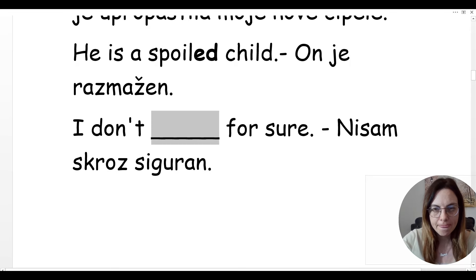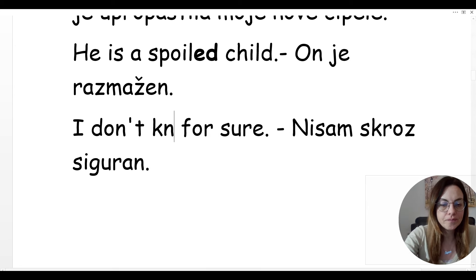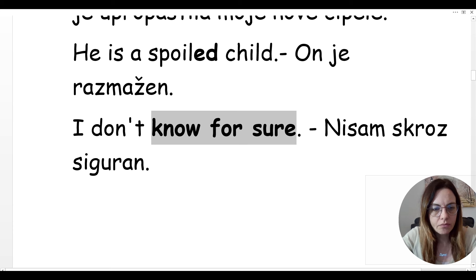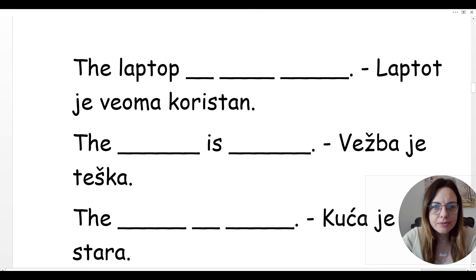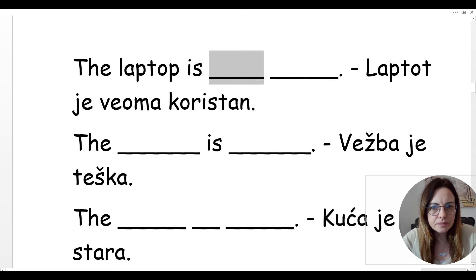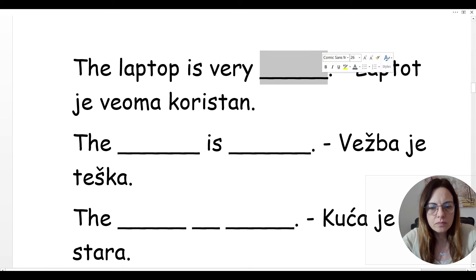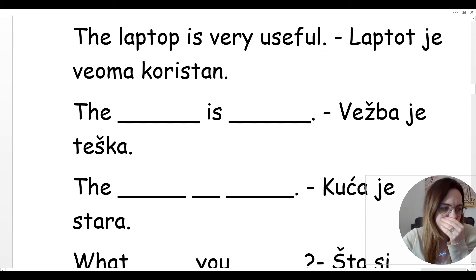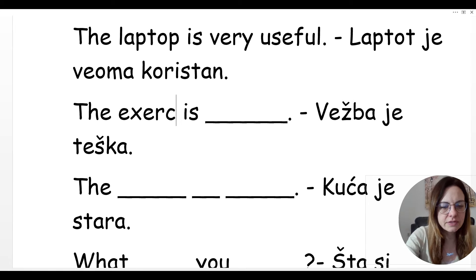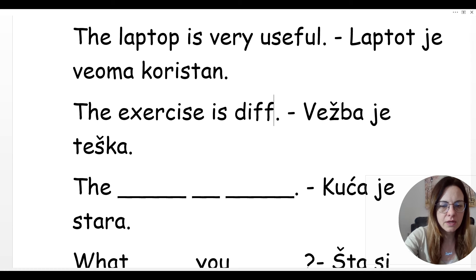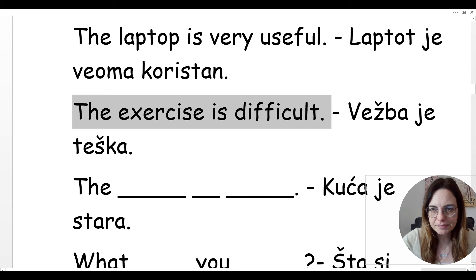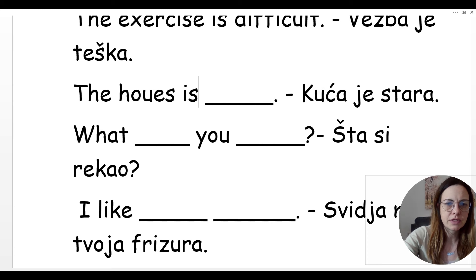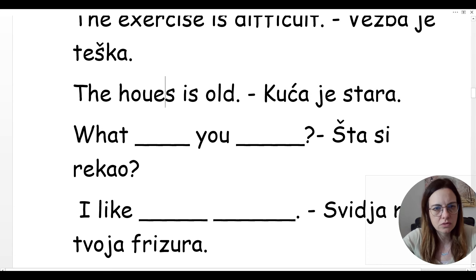Nisam skroz siguran — I don't know for sure. Ne znam to 100% — I don't know for sure. Laptop je veoma koristan — the laptop is very useful. Vežba je teška — the exercise is difficult. Kuća je stara — the house is old.